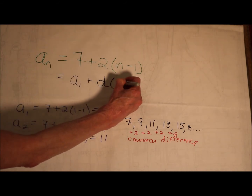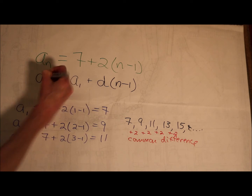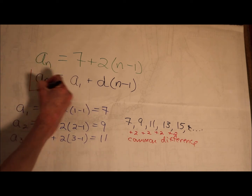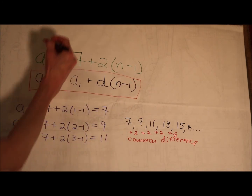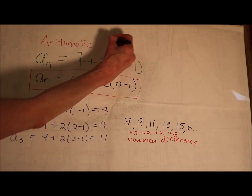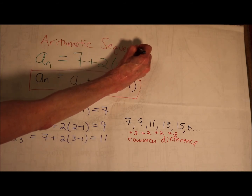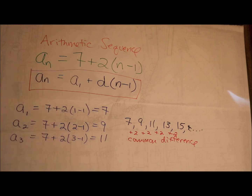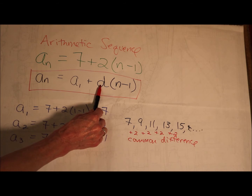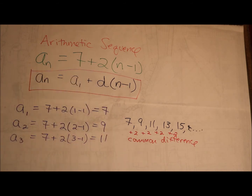And n minus 1. This, my friends, is one way to write an equation for any arithmetic sequence. This only works if you have an arithmetic sequence. There are lots of different ways you could write this equation — different forms — but this one will always work. Your nth term is the first term plus your common difference times the term number minus 1.